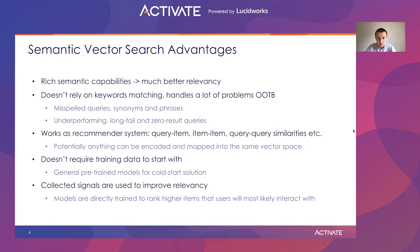Moreover, in many ways it can act as a recommender system. We can get all kinds of similarities — not only query to item, but also item to item, query to query, and so on. And in general, potentially anything can be encoded and mapped into the same vector space, even objects of a different nature, like text and images.